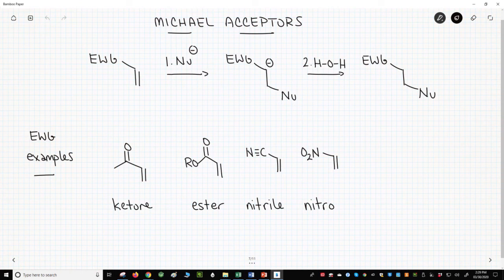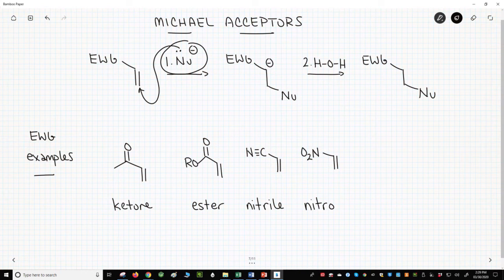We have a Michael addition across the top of the screen. The nucleophile, the Michael donor, attacks the carbon-carbon pi bond of the Michael acceptor. Notice the features of the Michael acceptor. You need an electron withdrawing group on the carbon-carbon double bond. The role of the EWG is to stabilize the formation of a carbanion after attack by the nucleophile.